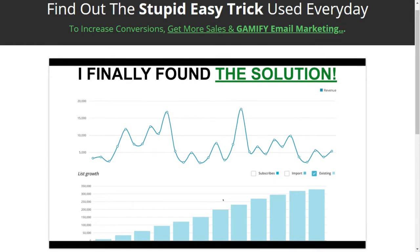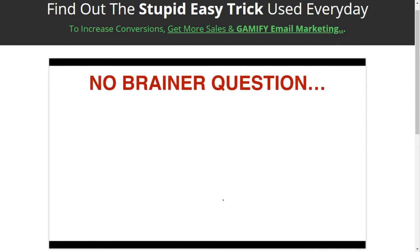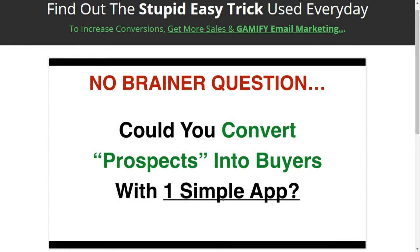On top of that, rather than interrupting people, we're also making them buy stuff. While they're on the site, they're giving us their email more often and they're buying more often. So the no-brainer question is: is it really possible that you could convert more prospects into buyers and build a bigger email list with one single app? And the answer is yes. So what I'm going to do now is switch over to our store and do a full demo of Wheelie Opt-in — the app that changed the game for me by gamifying email marketing on my store.